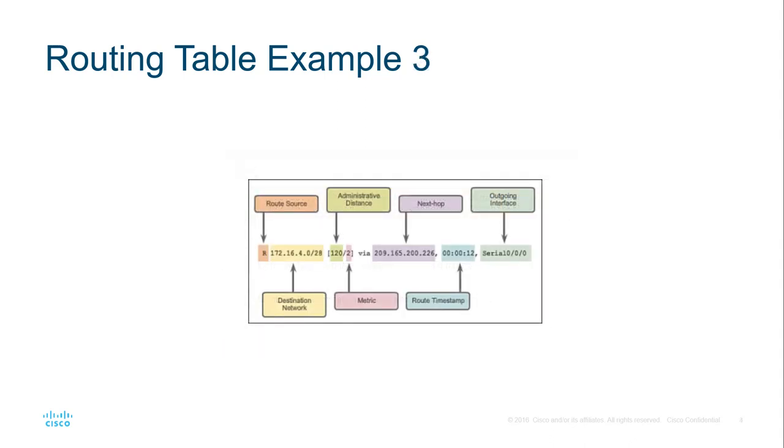Another example is a more structured example. R is the route source. Here we have the destination network. R is how the route was learned. Administrative distance will be the 20. The metric or the measurement will be 2. Where we're sending it might be an IP address or an interface. Route time is when the route was last heard from. And lastly will be the outgoing interface.